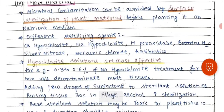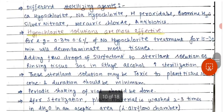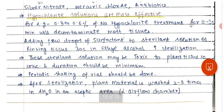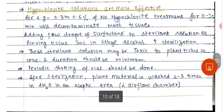Different sterilizing agents used here include sodium hypochlorite, calcium hypochlorite, hydrogen peroxide, bromine water, silver nitrate, mercuric chloride, and antibiotics. Hypochlorite solutions are most effective. For example, 0.3 to 0.6 percent sodium hypochlorite treatment for 15 to 30 minutes will decontaminate most plant tissues. Adding a few drops of surfactant to the sterilant solution or rinsing plant tissue for 30 seconds in ethyl alcohol can also improve sterilization.